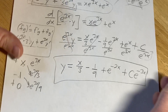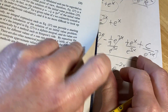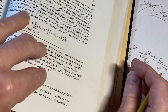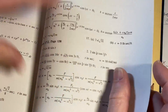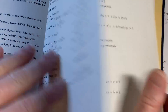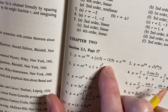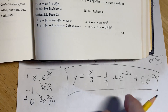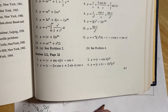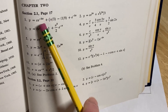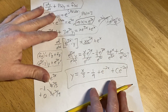The beautiful thing about this problem is we can check our answer. This is the first problem in the section on linear equations — page 17, number 1, section 2.1. Looking at the back of the book, the answer is: c·e to the negative 3x plus x/3 minus 1/9 plus e to the negative 2x. That's exactly what we have. So we did it correctly — good stuff.